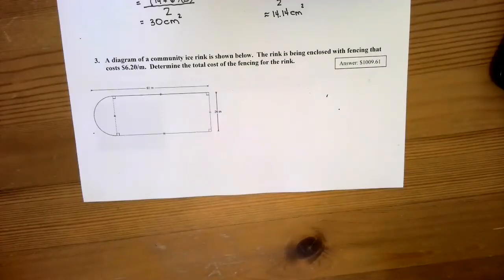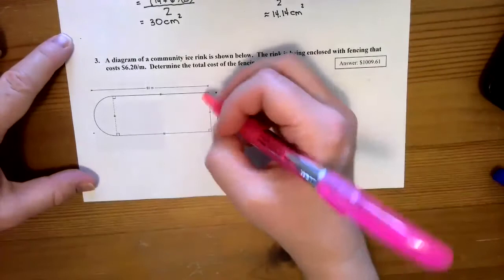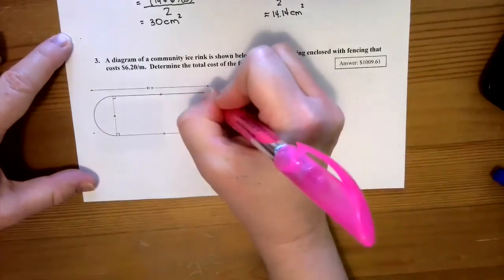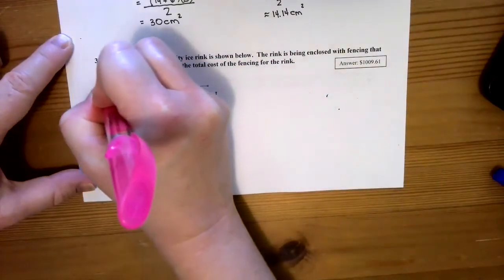Number three says the diagram of a community ice rink is shown below. The rink is being enclosed with fencing that costs $6.20 per meter, and you have to determine the total cost of the fencing. So the fencing is going to go around the outside of the rink.